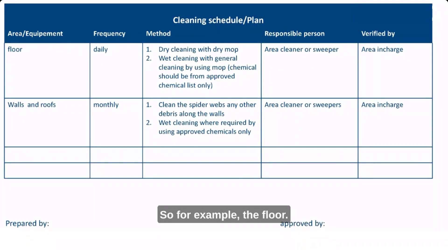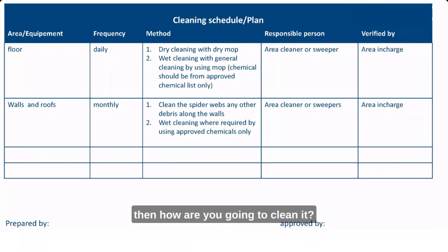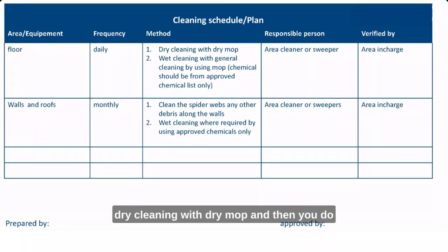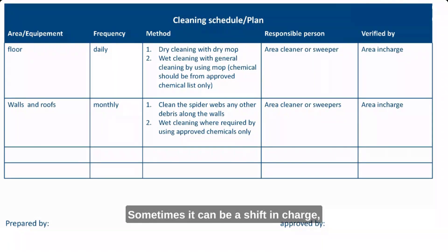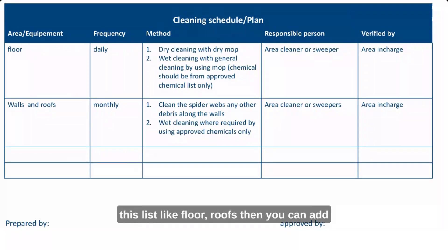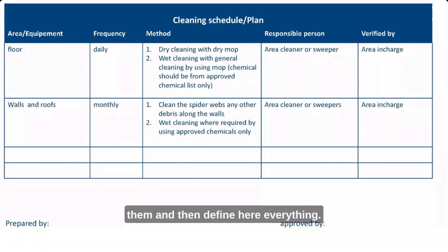For example, for the floor: clean daily (or shift-wise if needed), using dry cleaning first with a dry mop, then wet cleaning with approved chemicals. The cleaner is the area sweeper, and verification can be done by a shift in-charge or QA person. You then add all items — floors, roofs, equipment, machines, knives — to this list and define the frequency, method, and responsible person. This is your cleaning schedule.